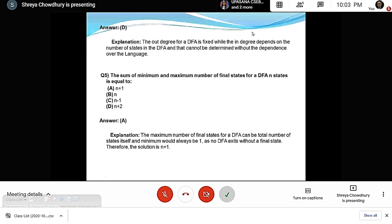Question 5: The sum of minimum and maximum number of final states for a DFA with n states is equal to n + 1. This is because a DFA should have at least one final state, and it can have a maximum of n final states. So the answer is 1 + n, or n + 1.